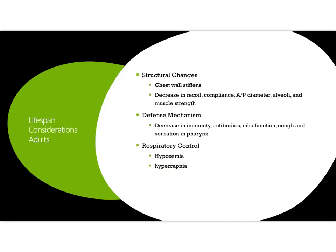A more flexible, less rigid larynx in infants makes them more susceptible to spasm and airway obstruction, with a higher infection rate and increased immunity as they mature. Regarding older adults: the chest wall stiffens, the rib cage does not expand and contract as well, and the diaphragm weakens — all leading to increased infections. Decreased immune function, antibodies, ciliary function, cough, and pharyngeal sensation increase infection risk and aspiration risk. Their respiratory control nervous system is less responsive to hypoxemia and hypercapnia, so they compensate more slowly.